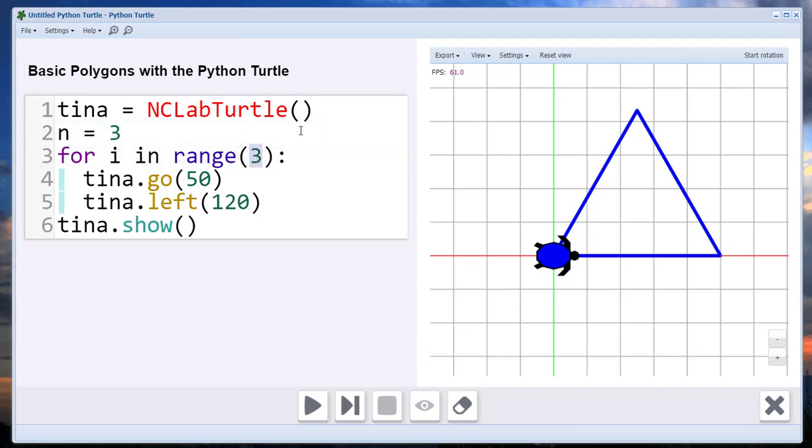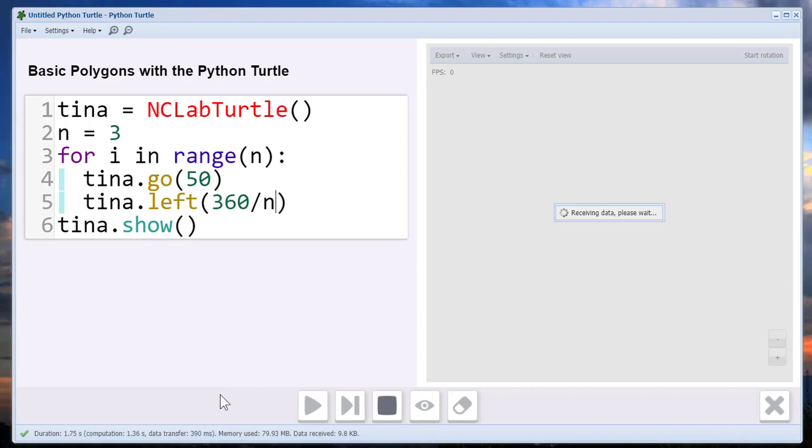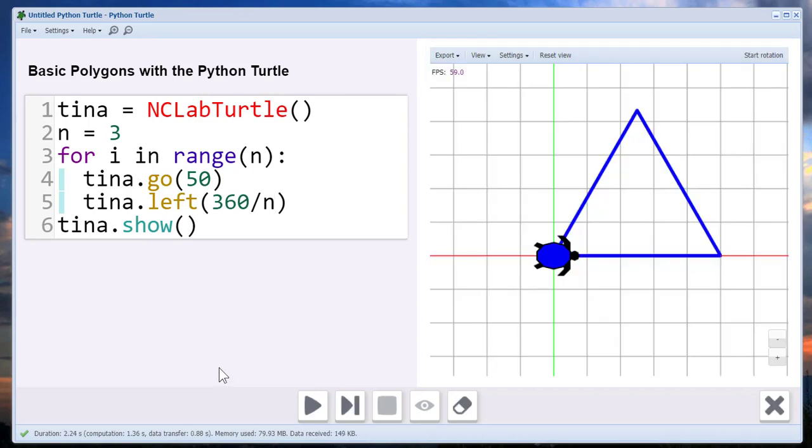Instead of putting 3 here, we'll put n, and instead of 120, we can now say 360 divided by n. And if we run that, sure enough, it does exactly the same thing.